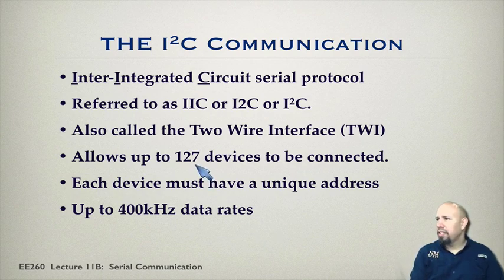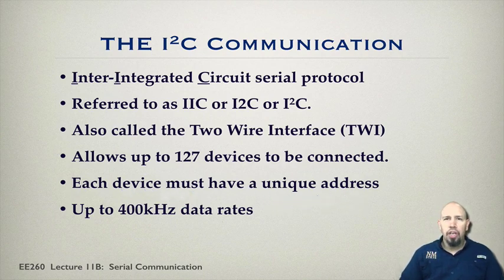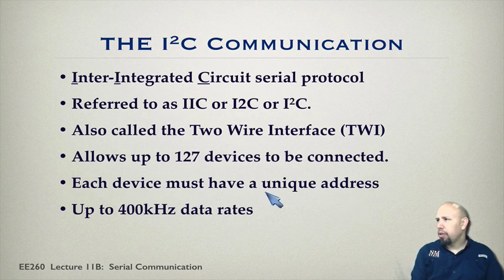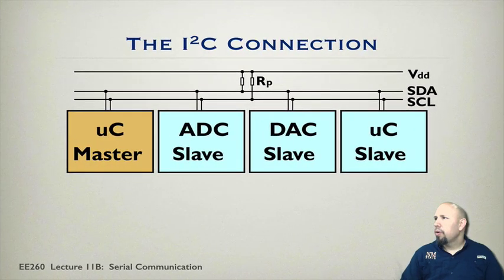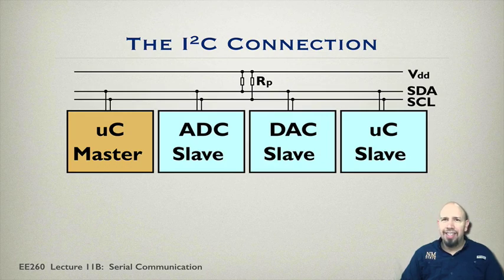I2C allows up to 127 devices to be connected. Each device has a unique address, and that's how the communication works — the address is transmitted at the beginning of communication to determine who it's speaking to. The data rate is up to 400 kilohertz. So it's not the fastest communication standard, but it gets the job done. The connections are fairly simple to make. Again, two-wire interface — but actually, as you can see, three wires. One of the wires is power.